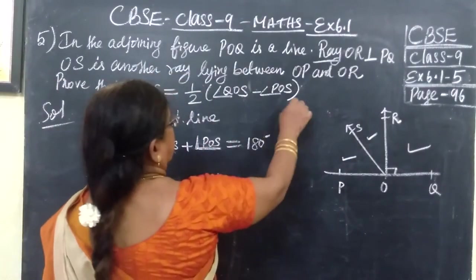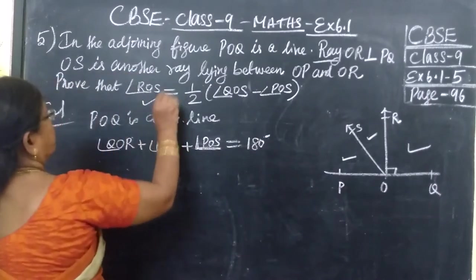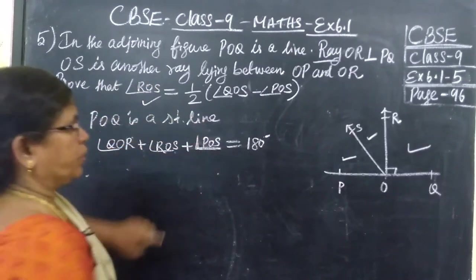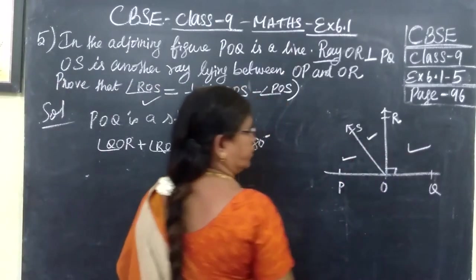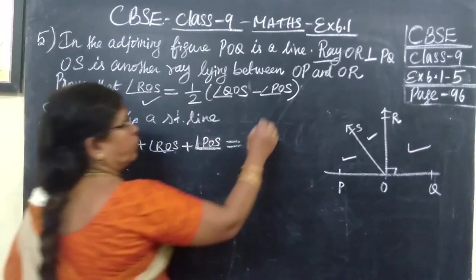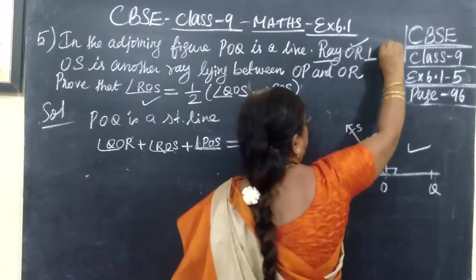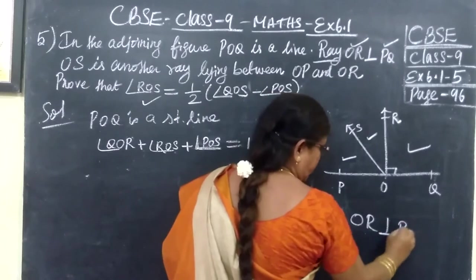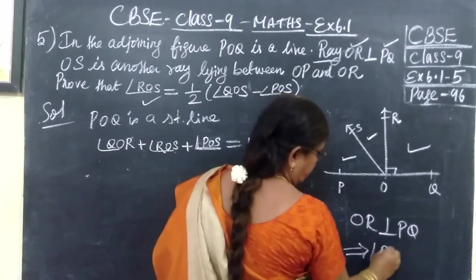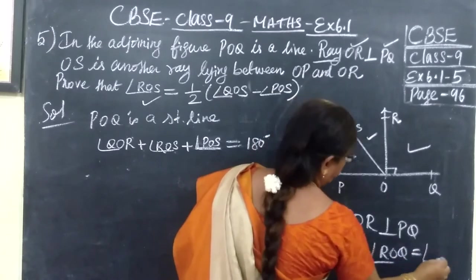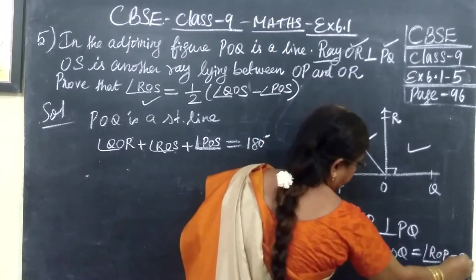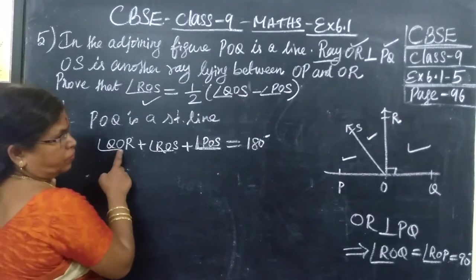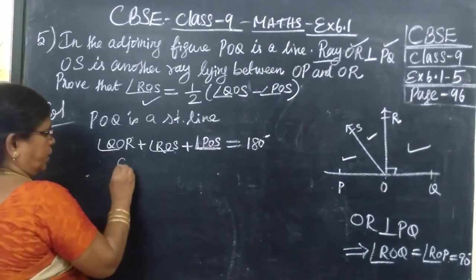Next, it is given: OS is another ray lying between OP and OR. Now, OR perpendicular to PQ implies angle ROQ equals angle ROP equals 90 degrees. So perpendicular means we know this is 90 degrees. So here for angle QOR you can write this is 90.